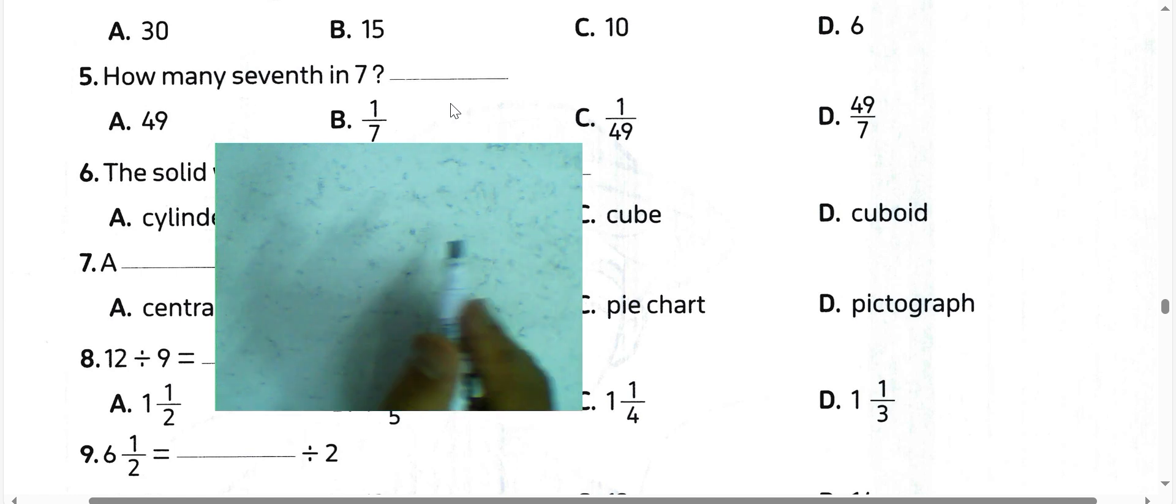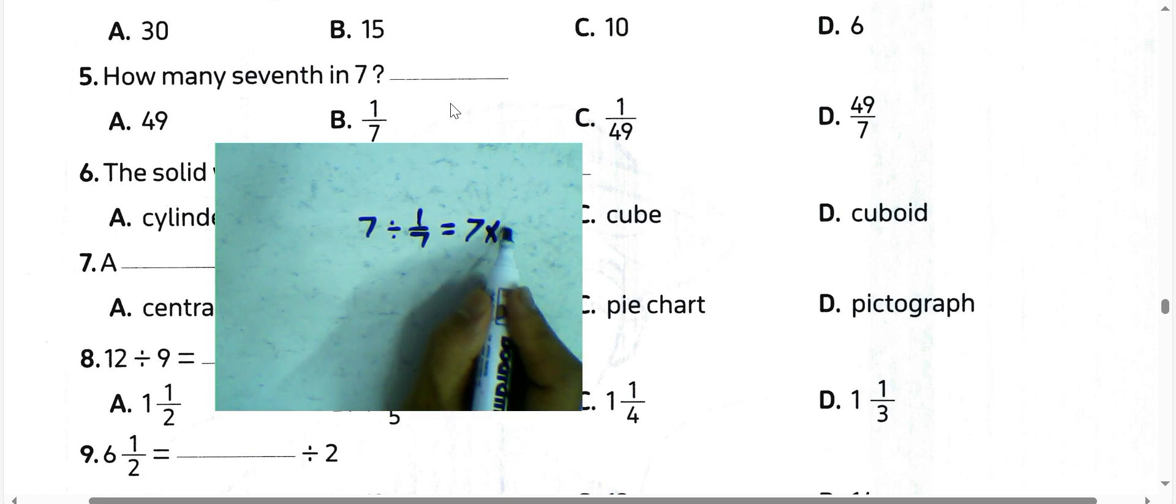Next question, how many sevenths in 7? We can write 7 divided by 1/7. Convert from division to multiplication: 7 times 7 is 49.